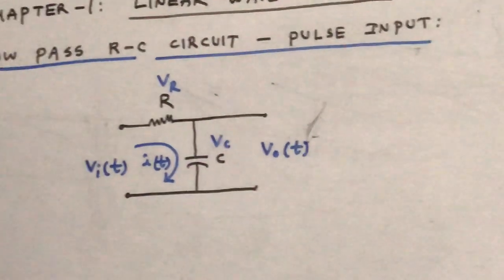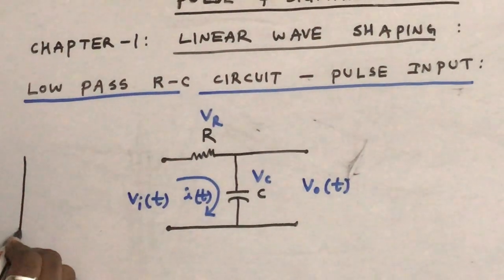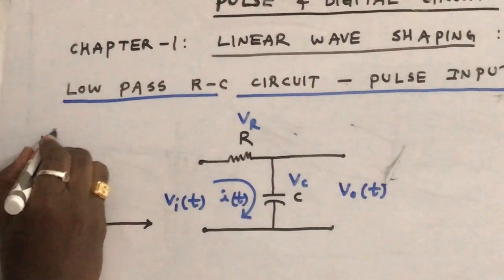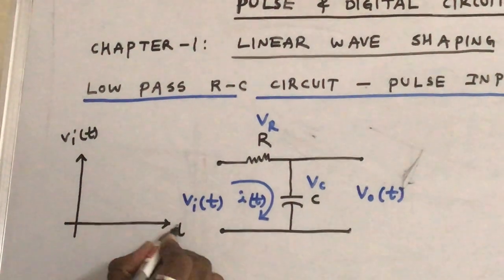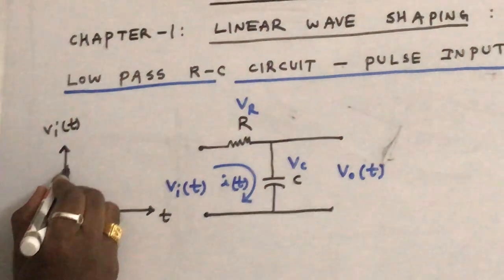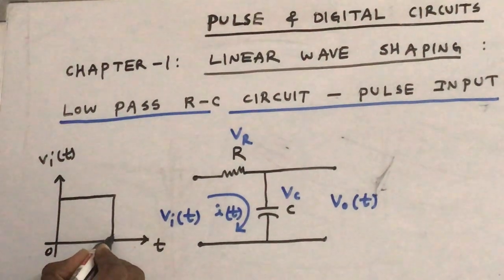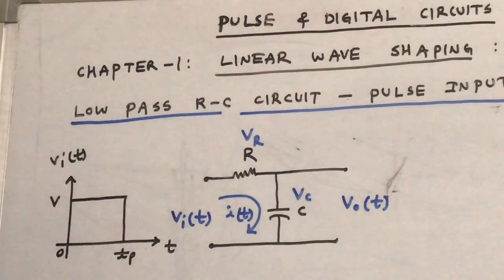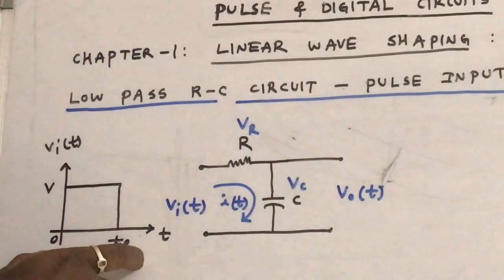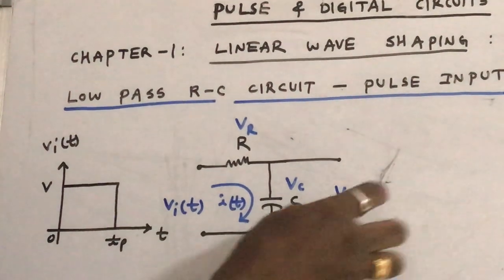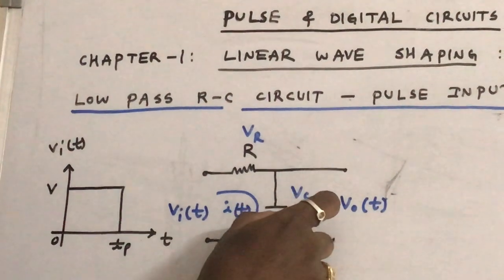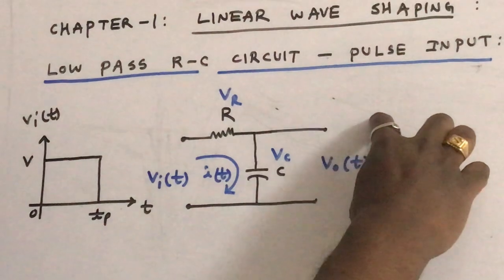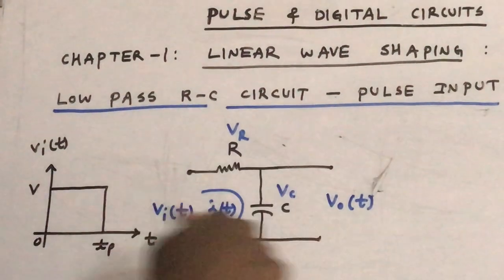Now for this circuit we are applying a pulse input. As you know the definition of pulse input — the pulse input maintains a constant voltage for a certain duration. Its amplitude is V from 0 to Tp. Our discussion is: when pulse input is applied to this circuit, what will be the behavior of the capacitor? That means what is the expression for the output voltage and what is the waveform of output voltage.